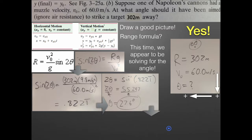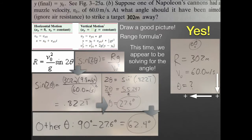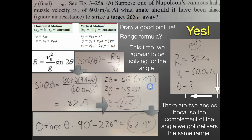There are actually two answers. Complementary launch angles produce the same range, so the other angle is 90° − 27.6° = 62.4 degrees. Both 27.6 degrees and 62.4 degrees give a range of 302 meters with a muzzle velocity of 60 m/s. Always remember that the complement of your calculated angle delivers the same range.